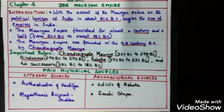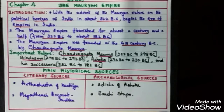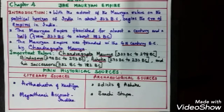Now let us find out what were the main historical sources to study about the Mauryans. Historical sources include both literary sources and archaeological sources. Under literary sources: the Arthashastra of Kautilya, and Megasthenes' account known as Indica. The archaeological sources include the Edicts of Ashoka and the Sanchi Stupa.